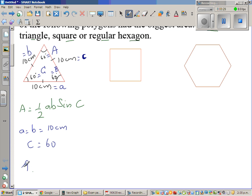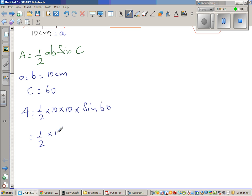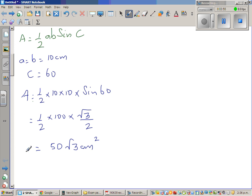Using this formula, a equals b equals 10 centimeters, and C or angle C is 60 degrees. The area of the triangle would be half times 10 times 10 times sine 60. This is half times 100 times sine 60, which is root 3 over 2. This should be 25 because 100 divided by 4. So this is 25 root 3 centimeters squared.